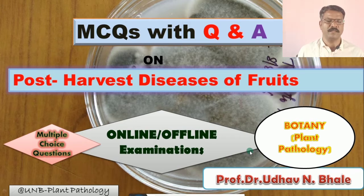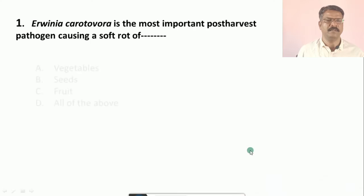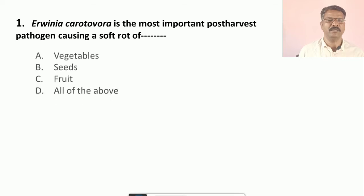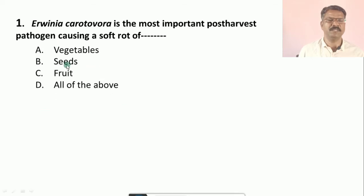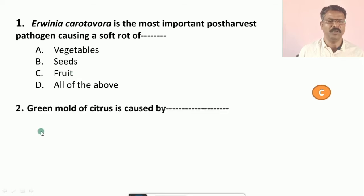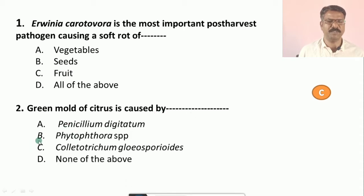The first question is: Irvinia curtohora is the most important post-harvest pathogen causing soft rot of — options are: a) vegetables, b) seeds, c) fruits, d) all of the above. And the correct answer is a. Question number two's correct answer is Penicillium digitatum.